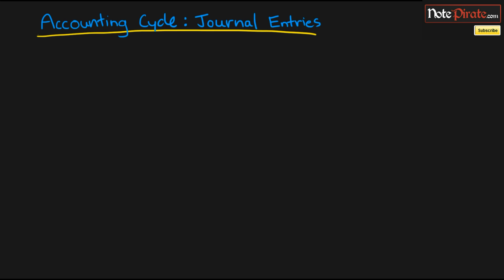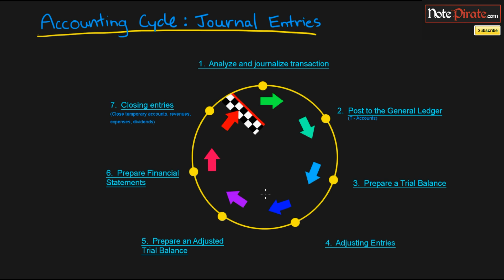Over the next few videos we're going to be looking at the accounting cycle. I'm separating the accounting cycle into seven different videos to demonstrate the seven different parts, starting with this presentation which is going to cover journal entries. I decided to use some of my Photoshop abilities to come up with a NinjaNode exclusive diagram, and this cycle is round because it is a circular cycle. We're going to be starting off with the first step: analyzing and journalizing transactions.